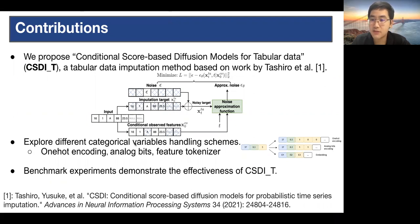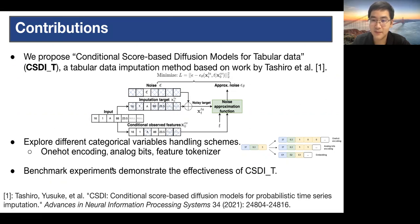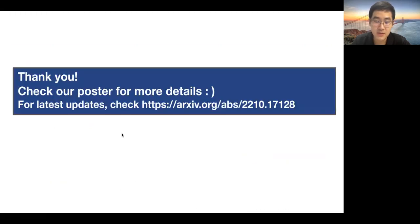Note that the original diffusion model does not support categorical variables, so we also explore different categorical variable handling schemes, including one-hot encoding, log bits, and log bits with feature tokenizer. We also conduct benchmark experiments to demonstrate the effectiveness of CSDIT. That's all — thank you.